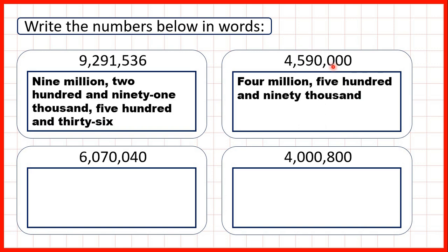Then we look at our last three digits. But here we have zeros as our last three digits — zeros in our hundreds, tens, and ones. So we don't need to write anything after the word thousand. Our number is four million five hundred and ninety-one thousand.